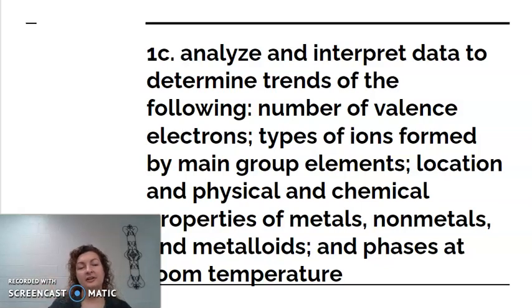Hey everybody, Mrs. Bodishan here. We're going to go ahead and look at 1C in our AKS portfolio. It says, I can analyze and interpret data to determine trends of the following: number of valence electrons, types of ions formed by the main group elements, location and physical chemical properties of metals, nonmetals, and metalloids, and phases at room temperature.